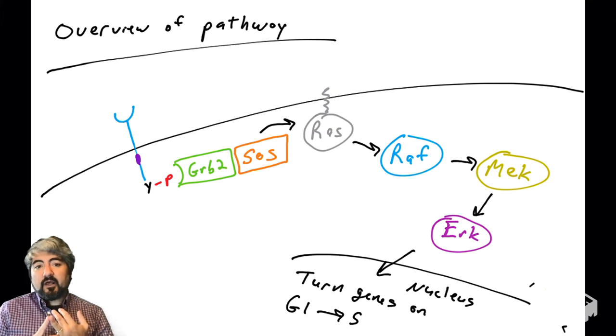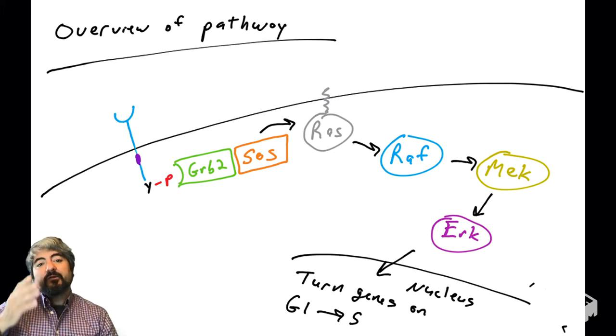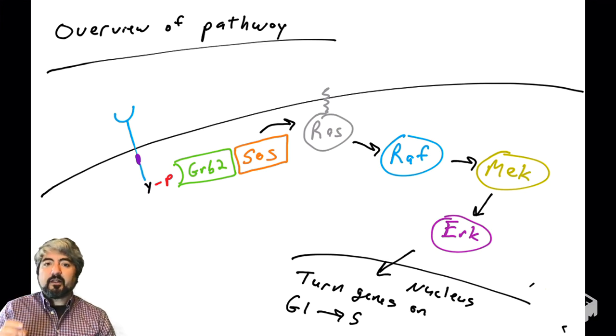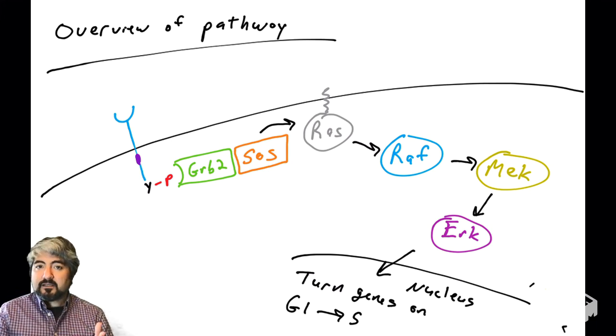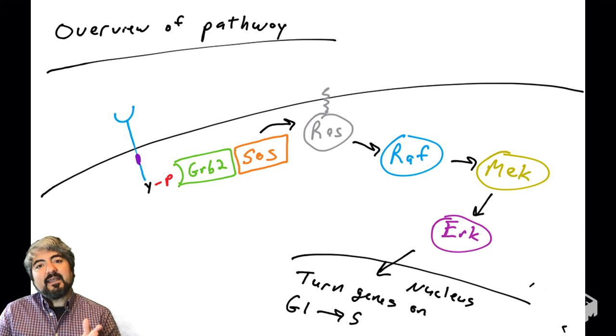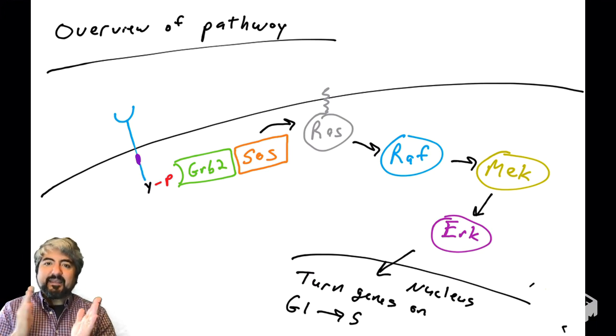So we're going to learn in later videos the functions of all these proteins. GRAB2, SOS, RAS, RAF, MEK-ERK. You'll see the pathway that I've drawn here starts at a receptor. So this is a growth factor receptor, also known as a receptor tyrosine kinase. And this pathway goes from the receptor into the cytoplasm, into the nucleus, and actually results in the transcription of genes. So genes get turned on, genes get activated, and these genes are going to help move the cell from G1 phase into S phase.